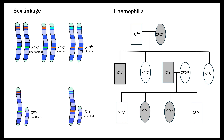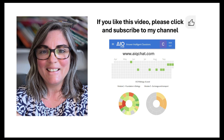For application questions, what they're checking is: do you know the difference between dominant and recessive, and do you know that if a gene is linked on the X chromosome, you only need one recessive allele for the trait to be expressed? I hope you liked this video — please click the like button and subscribe to my channel, and check out my revision platform at www.eiqchat.com.